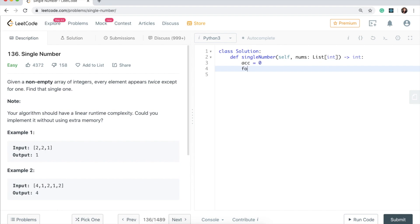And then what I'm going to do is iterate over my nums. So for num in nums, I'm going to use the accumulator to XOR the numbers. So I will say ACC XOR equal to nums.